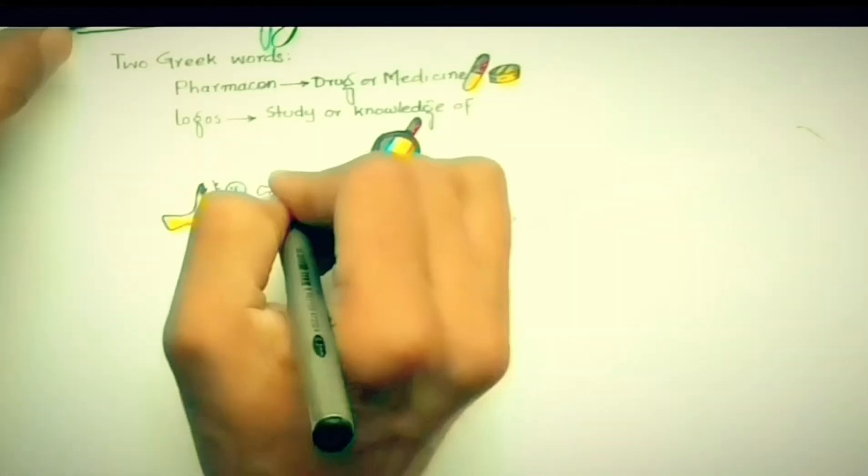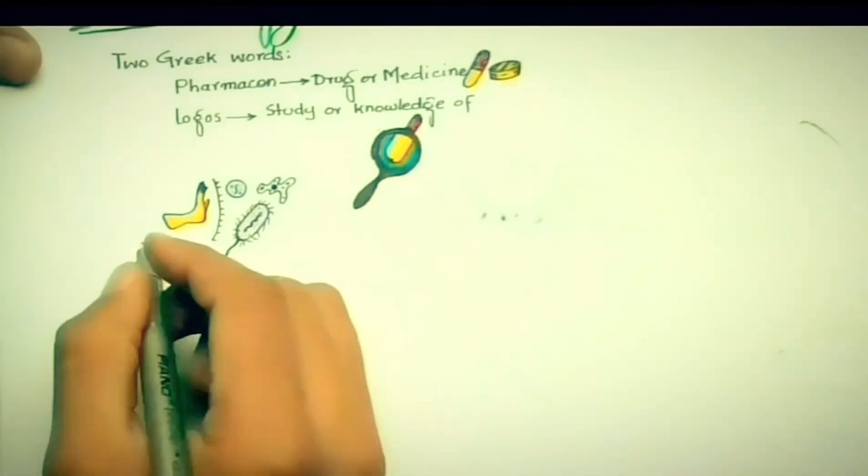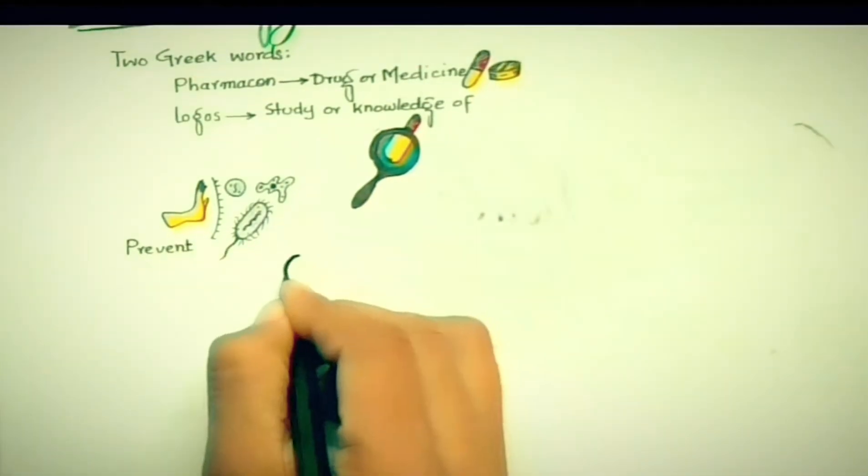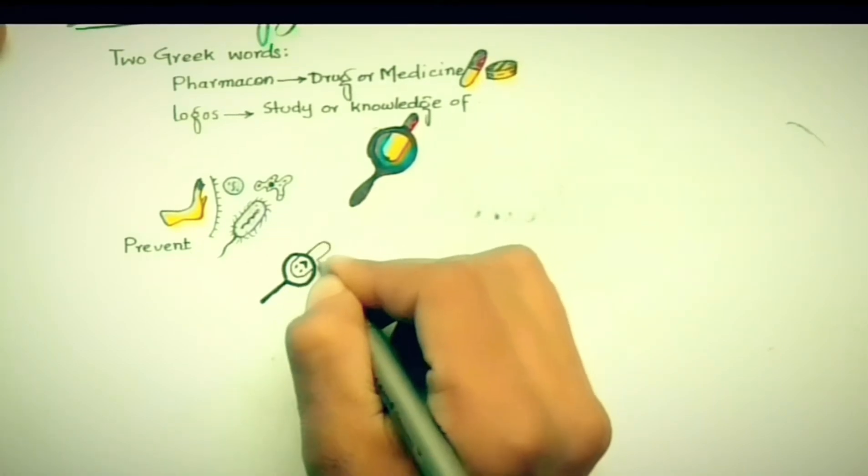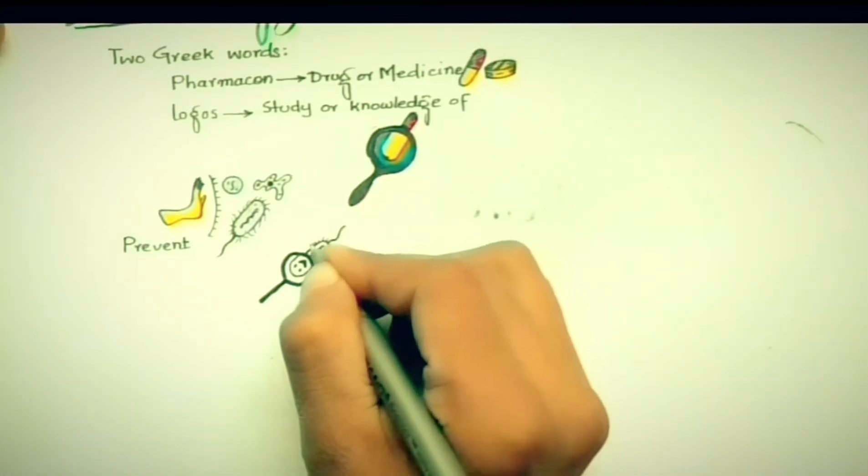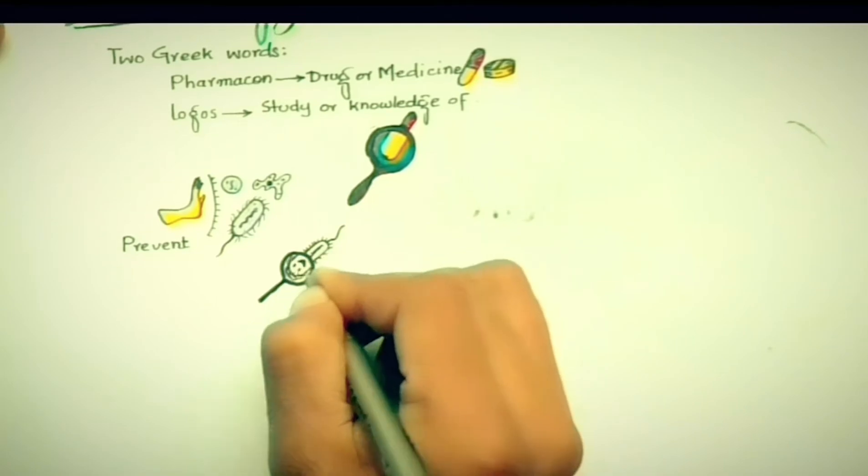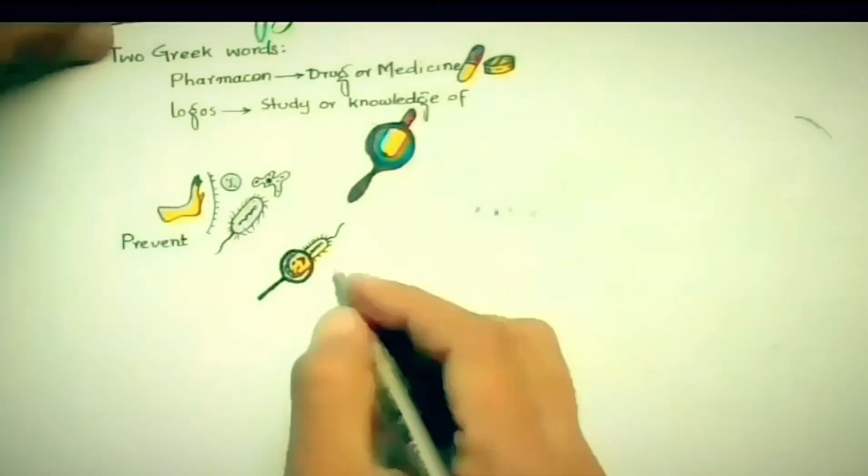When a drug is used for the prevention of disease, it is called prophylactic use. Similarly, drugs can be used for diagnostic purposes like various radiopharmaceuticals and barium sulfate used for locating obstruction in the GI tract.